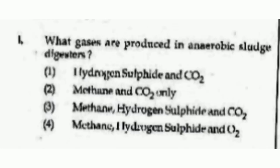The fourth question: What gases are produced in anaerobic sludge digesters? Options are Hydrogen Sulphide and CO2; Methane and CO2 only; Methane, Hydrogen Sulphide and CO2; or Methane, Hydrogen Sulphide and Oxygen. The right answer is option number 3, Methane, Hydrogen Sulphide and CO2.